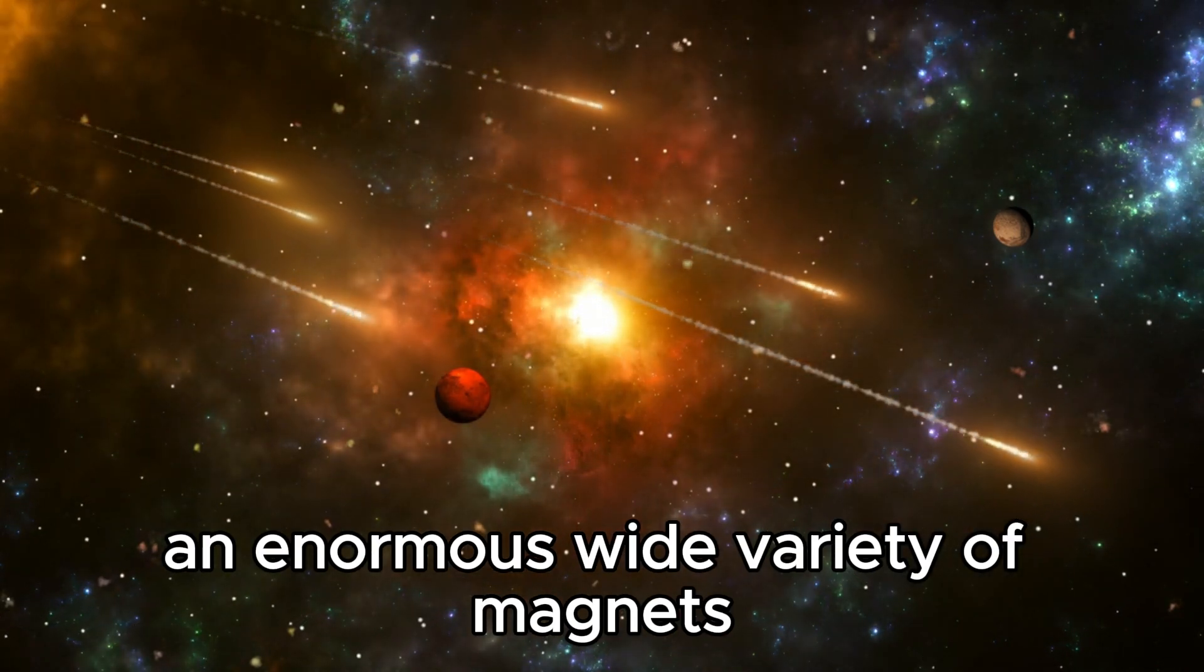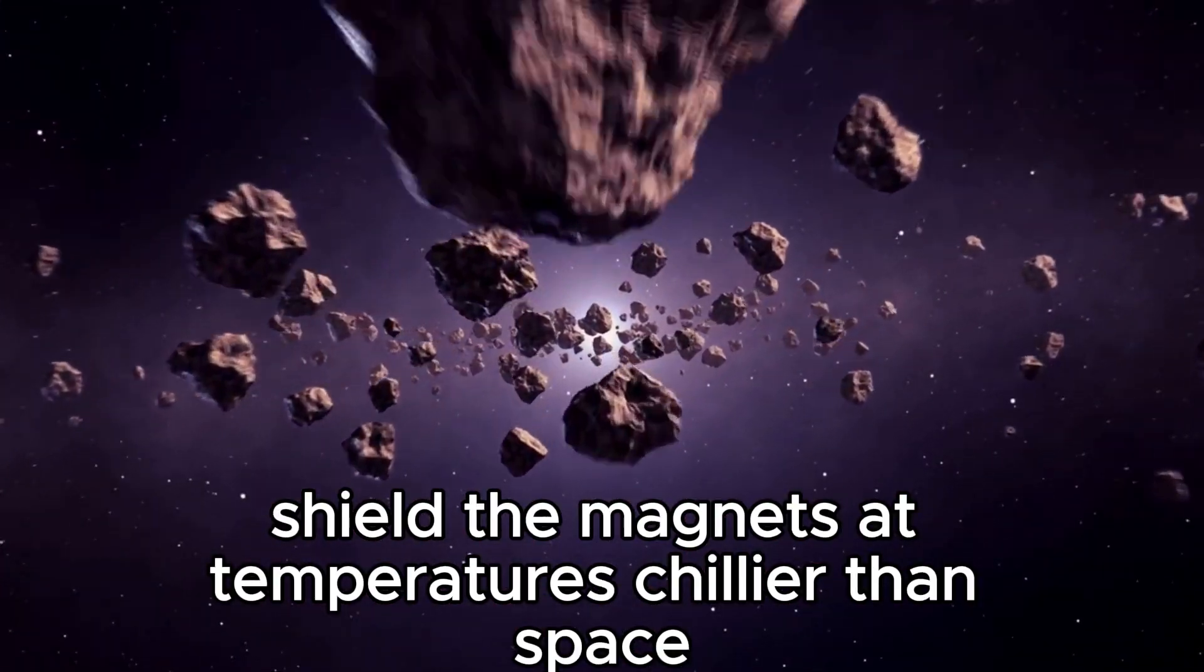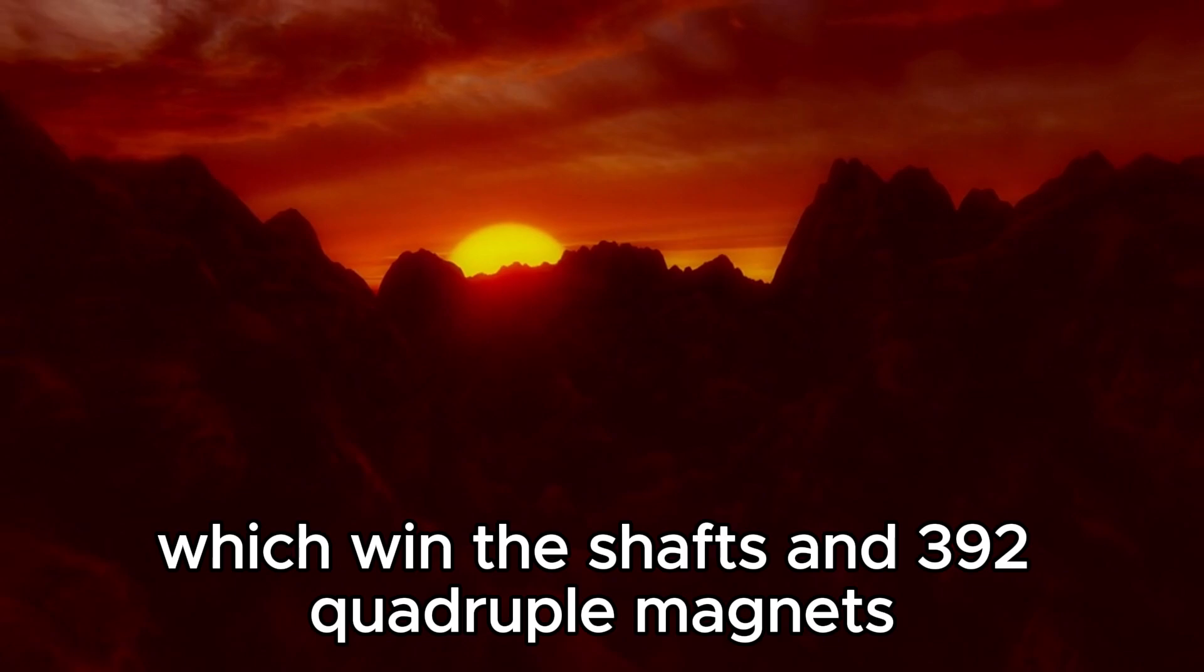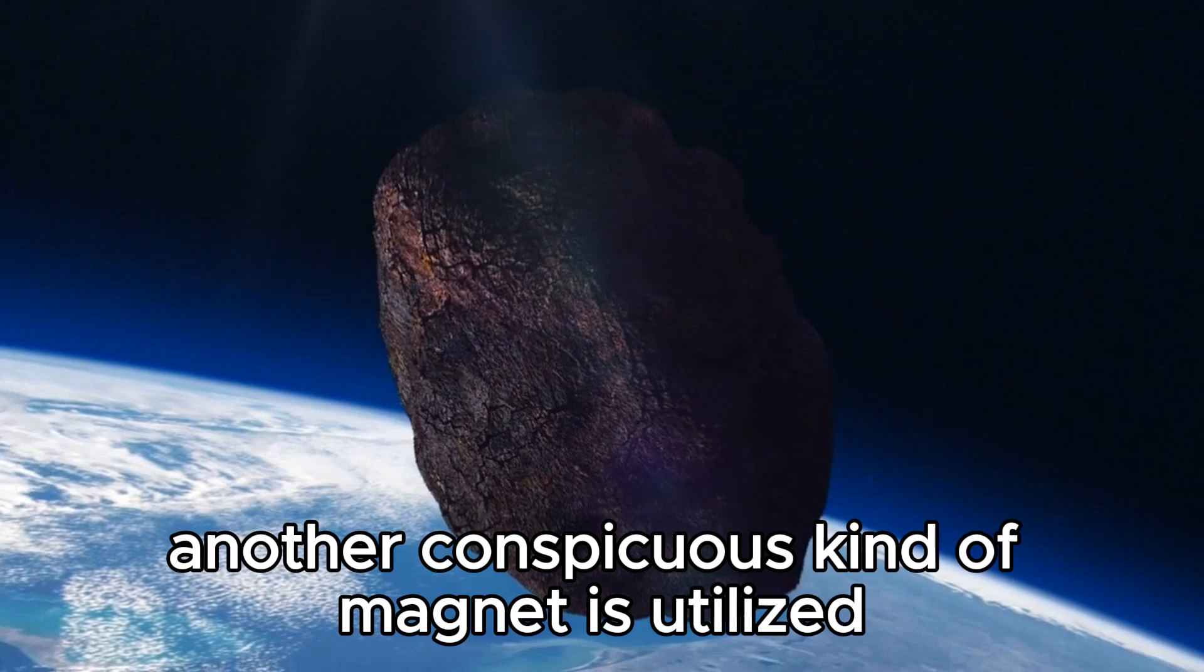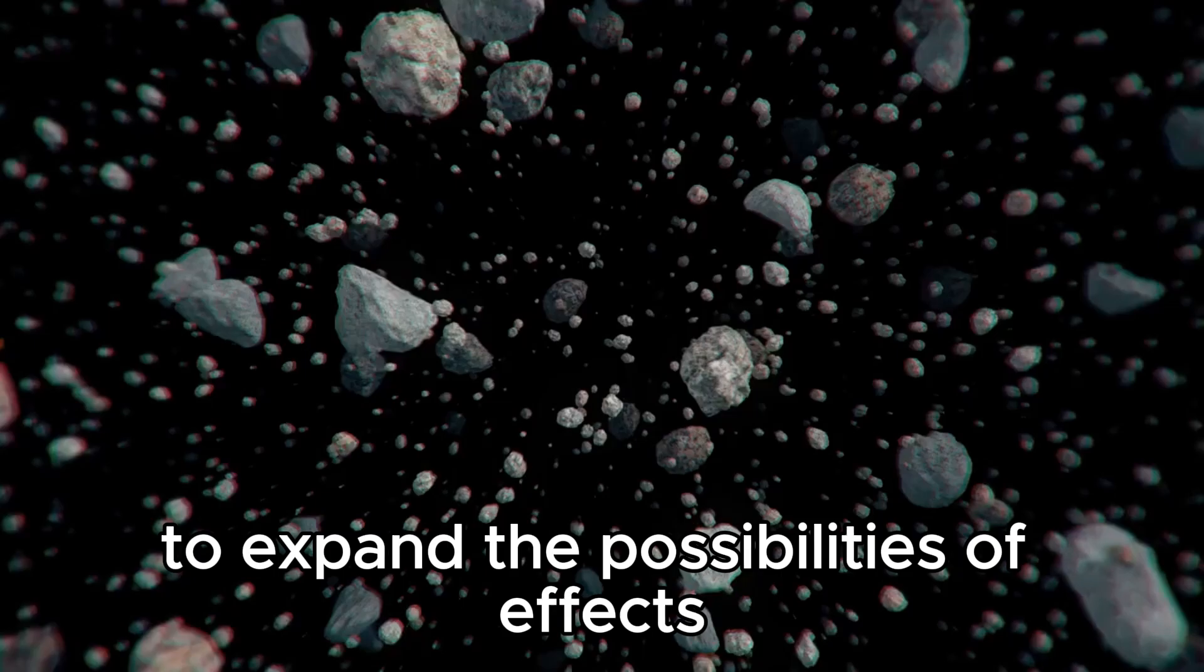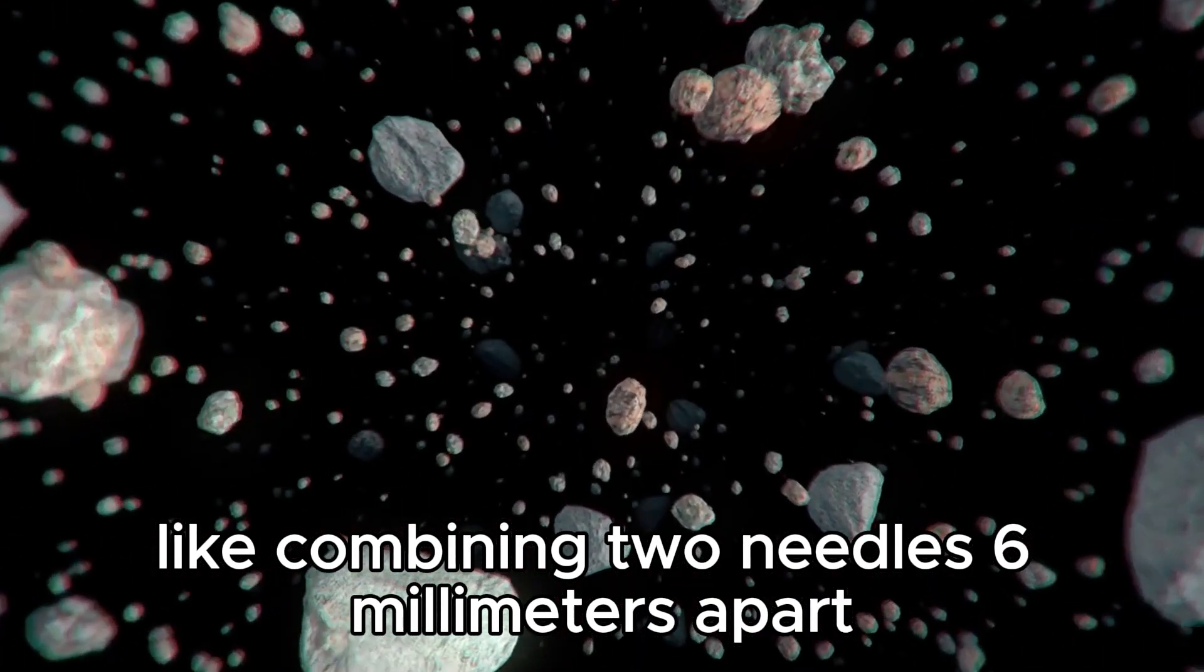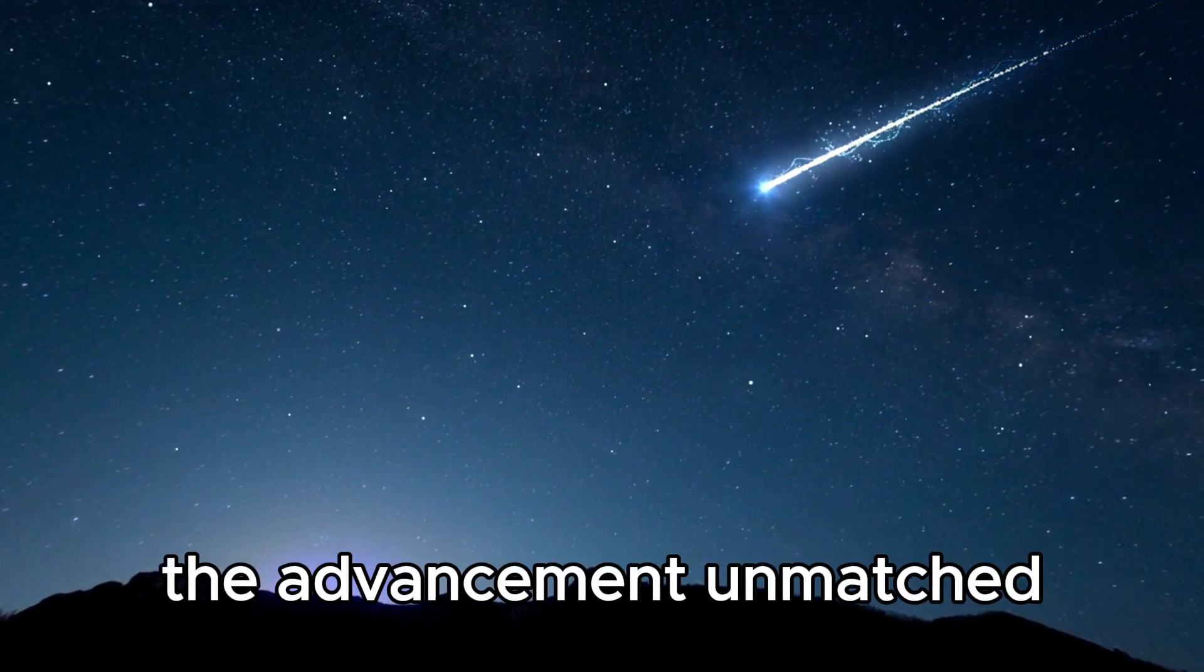An enormous wide variety of magnets guide the protons on their tour while dazzling cooling frameworks shield the magnets at temperatures chillier than space. These contain 1,232 dipole magnets, which guide the beams, and 392 quadrupole magnets, which focus the bars. Just before influence, another conspicuous kind of magnet is utilized to press the particles close together to expand the possibilities of effects. The errand of CERN is to influence like combining two needles, six millimeters apart, with such precision that they meet.